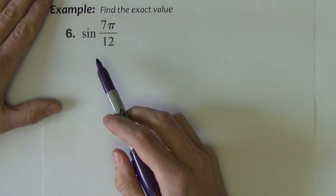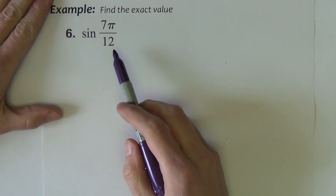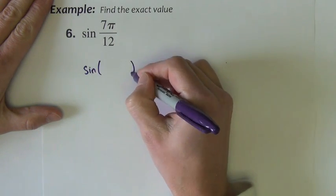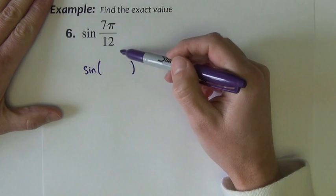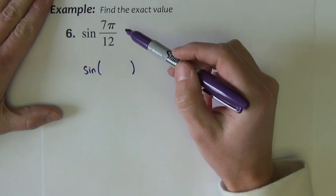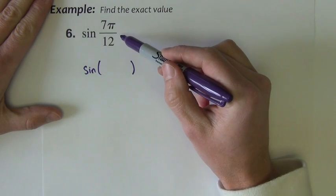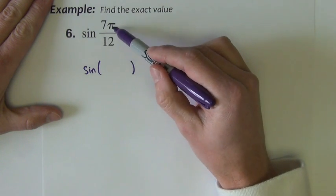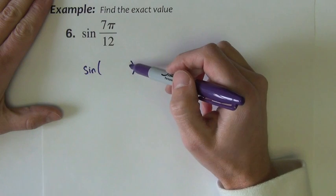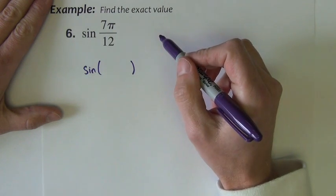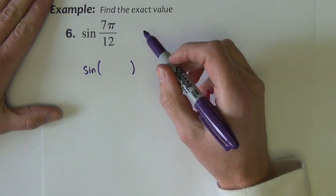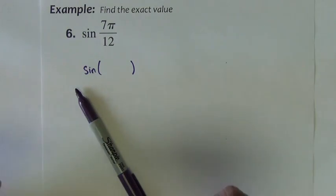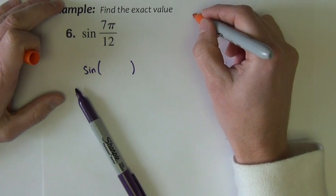Next example asks for the sine of 7 pi over 12. I need to do the same thing. Come up with two angles that either add or subtract to 7 pi over 12. That's harder to do when the angle is given in radians, because radians involve fractional values, and to add or subtract fractions, they need common denominators, and it's just kind of a mess. It's just a challenge to do. So what I like to do instead when I'm given a radian angle is convert it to a degree angle.